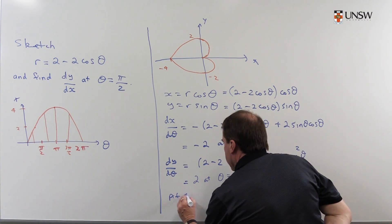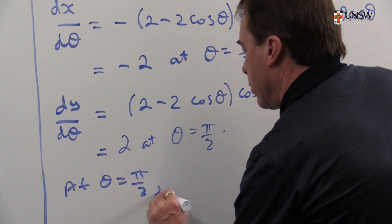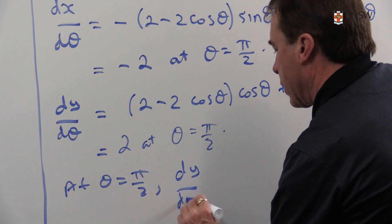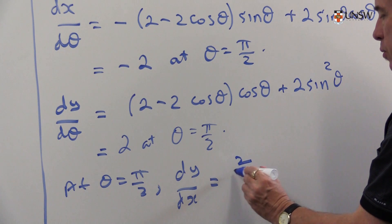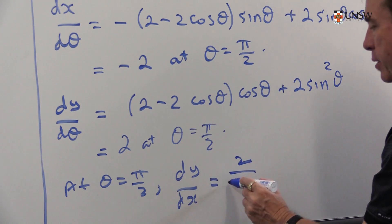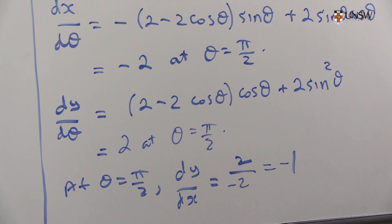So at θ = π/2, dy/dx is going to be dy/dθ, which is 2, divided by dx/dθ, which is -2, which is -1.